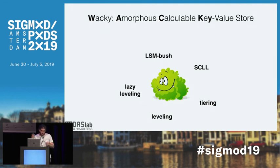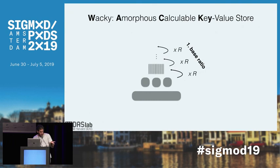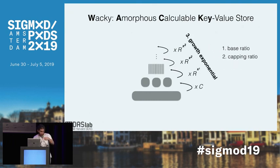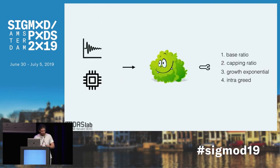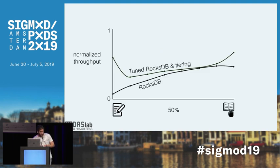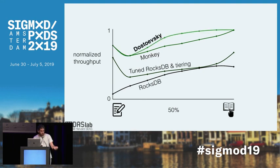We generalize LSM-Tree and LSM Bush into a scheme called WACKY, which allows navigation of the whole design space using a small set of knobs: the base ratio, the capping ratio, a growth exponential controlling the rate of size ratio growth, and the greediness of merge operations within levels. WACKY navigates these knobs with respect to the workload and hardware. In performance experiments on RocksDB and TuneDB with increasing proportions of point reads, MONKEY improves on baseline by optimizing bloom filter memory allocation, Dostoevsky further improves by adding the lazy leveled merge policy, and WACKY dominates all schemes — being by definition a superset — and is particularly better in the more write-optimized space.